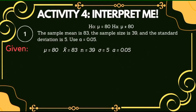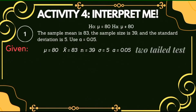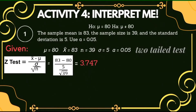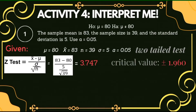If we look at the symbol used in our alternative hypothesis, we will know that this is an example of a two-tailed test because of the 'not equal' symbol. Since 39 is greater than 30 and the standard deviation is known, we are going to use the Z-test in computing the computed value. Using the formula, we substitute the given and we will get 3.747. Since we are using a 0.05 level of significance and it is a two-tailed test, our critical value is equal to positive and negative 1.960.